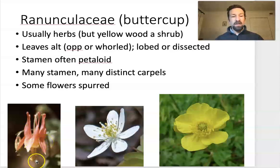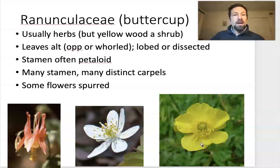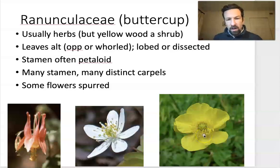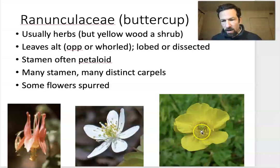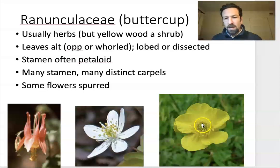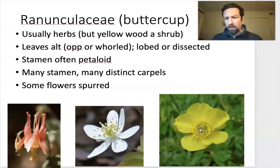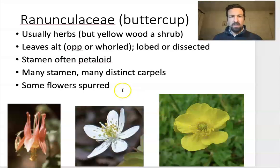In all three of these flowers, you can see many anthers. We can also see, especially in the flower on the far right — this buttercup flower — that there are many distinct carpels. Each of these little white spots is its own stigma, so it looks like there's maybe a couple dozen separate carpels in this flower.